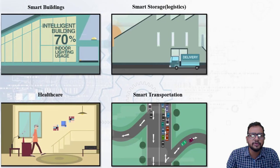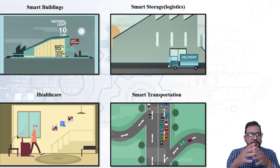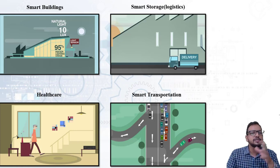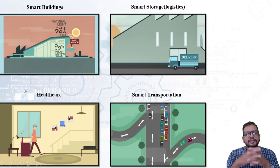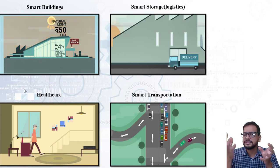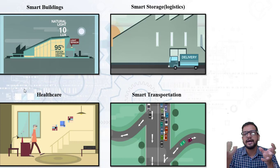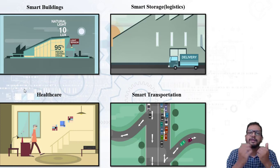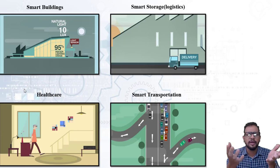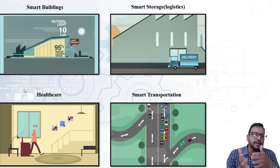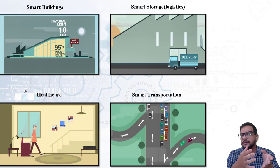Now let us see some examples. I have shown four diagrams representing IoT: smart building, smart storage, healthcare system, and smart transportation. In smart buildings, a light sensor senses the surrounding intensity of light — atmospheric light and sunlight. As per that, indoor lights are changed. During daytime, sunlight intensity is higher, so indoor light intensity should be lower. At nighttime, outdoor light is lesser, so indoor lighting needs to increase. This is an example of a smart building.